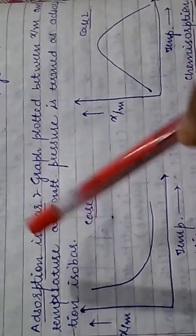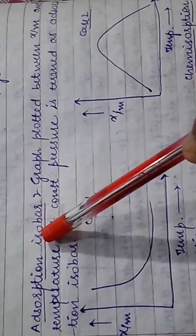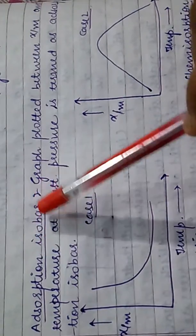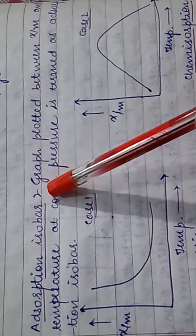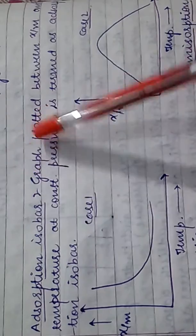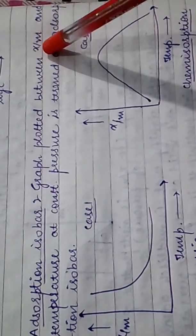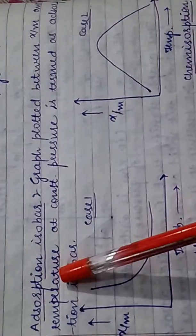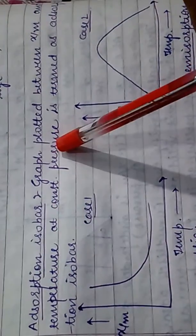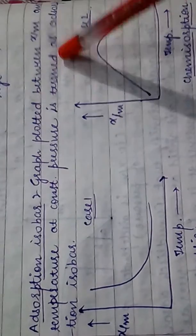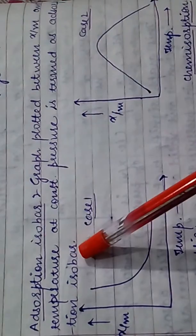Now we come to adsorption isobar. 'Iso' means same and 'bar' means pressure. So the graph plotted between x/m and temperature at constant pressure is termed as adsorption isobar.